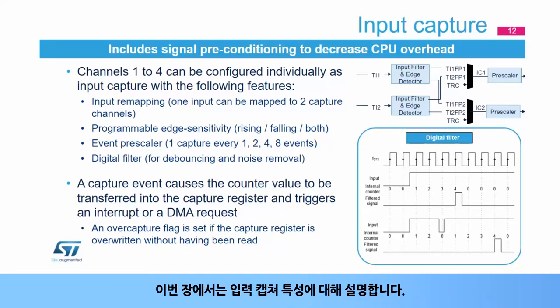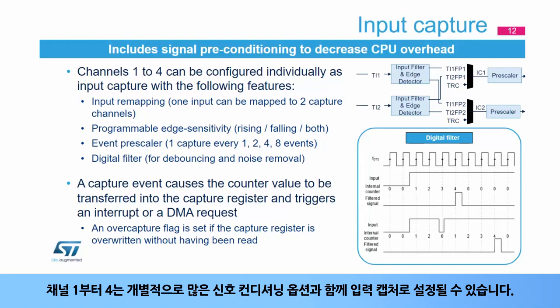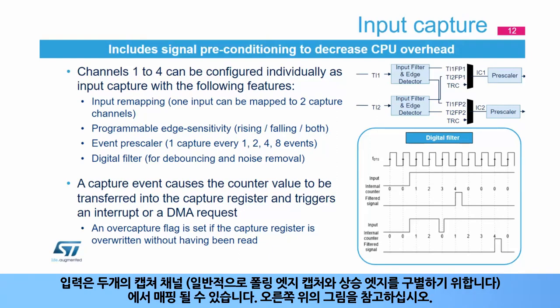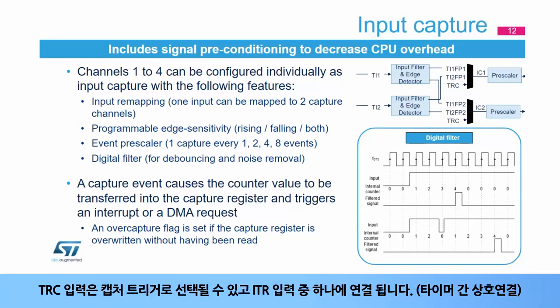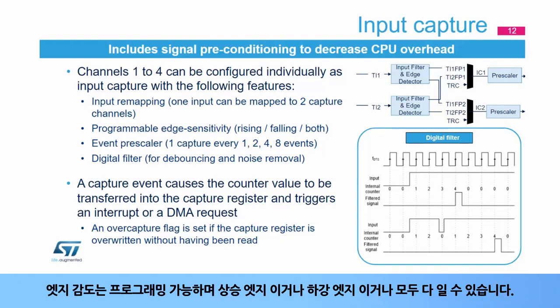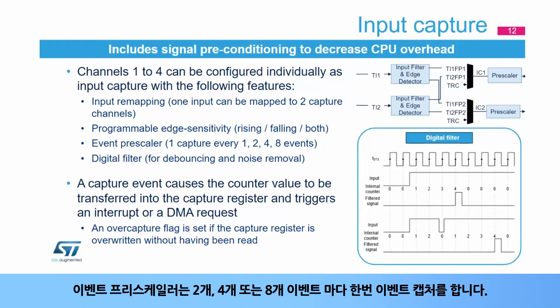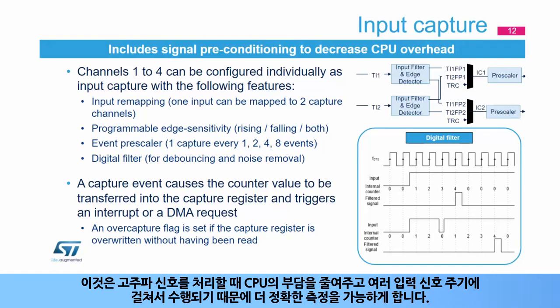Channels 1 to 4 can be individually configured as input capture with signal conditioning options. An input can be mapped on two capture channels, typically to differentiate rising edge from falling edge capture. The TRC input can be chosen as the capture trigger, connected to one of the ITR inputs. The edge sensitivity is programmable: rising edge, falling edge, or both edges. An event pre-scaler allows capture of one event every 2, 4, or 8 events, which decreases the CPU burden when processing high-frequency signals and allows more accurate measurement over multiple input signal periods.